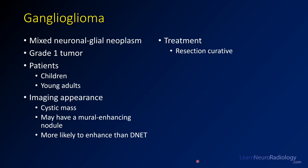This lesion is a ganglioglioma. Gangliogliomas are mixed tumors with partial neuronal and partial glial components, and are grade one tumors. Much like DNETs, they tend to be cystic masses and can have an enhancing nodule, but they are more likely to enhance than DNETs. If you're weighing whether a lesion is a DNET or ganglioglioma, enhancement favors ganglioglioma — though the differential is very similar and you may not always be able to tell the difference. These are most common in children and young adults, and are treated by resection, which is completely curative.